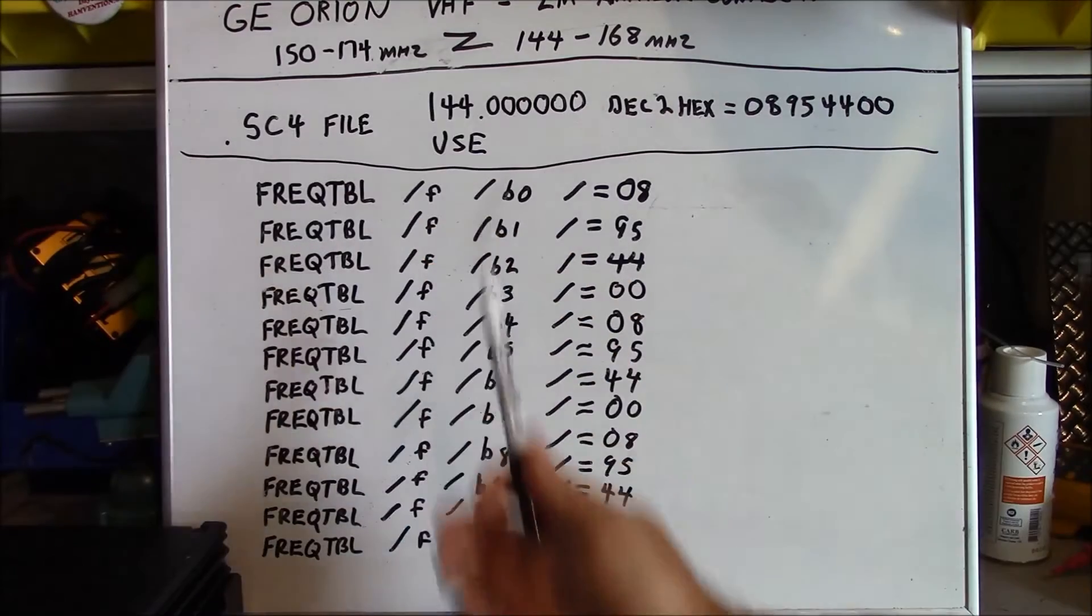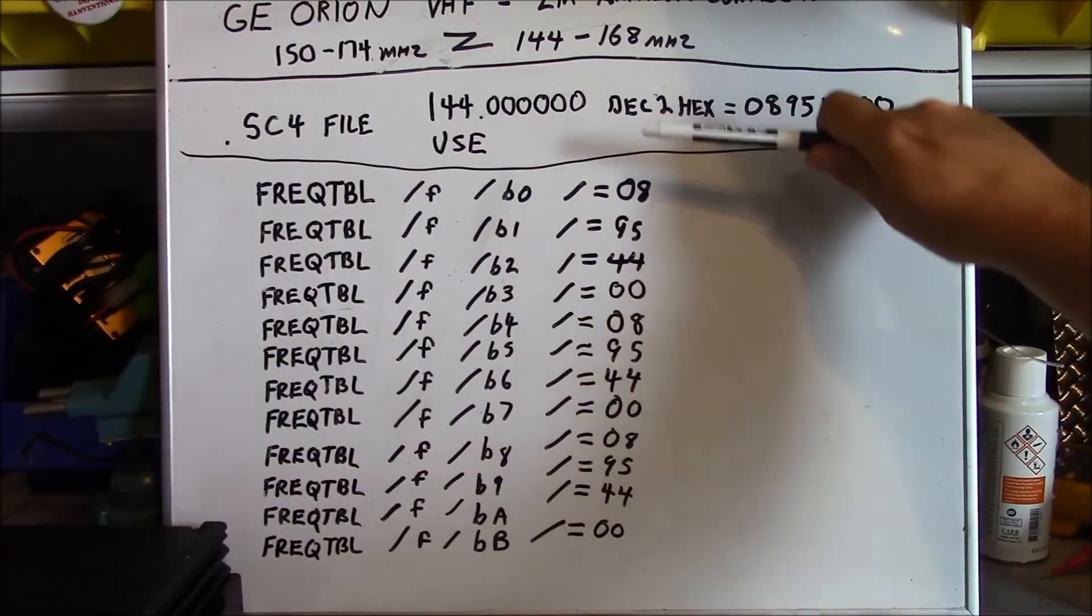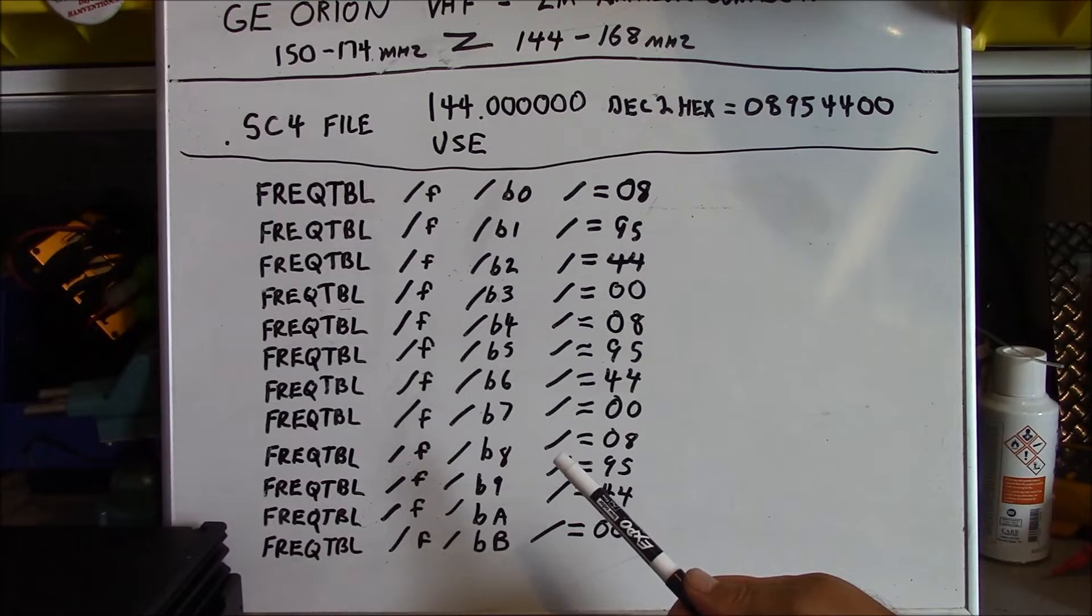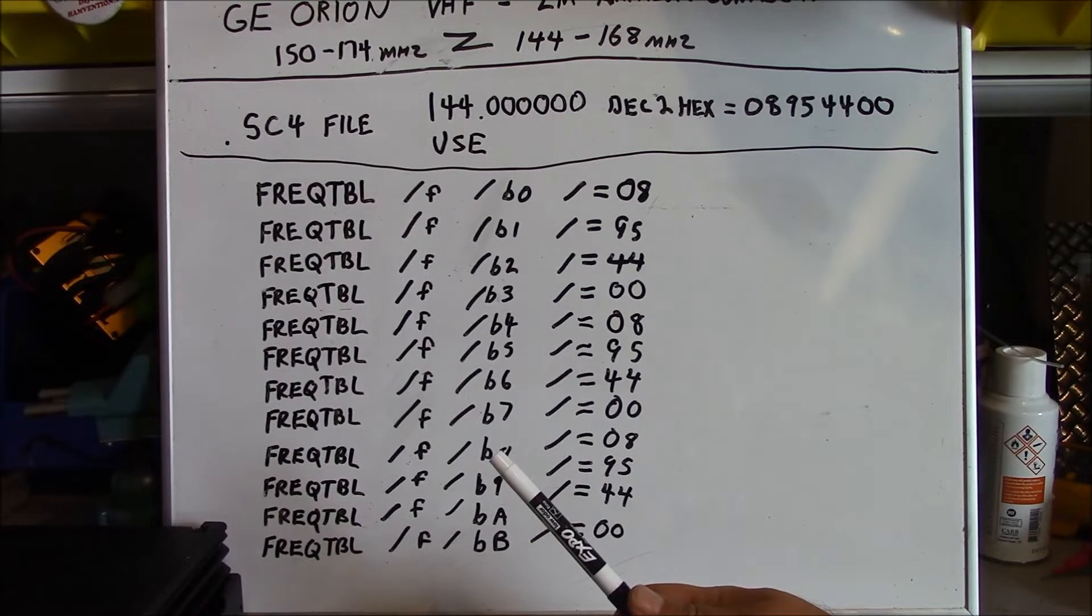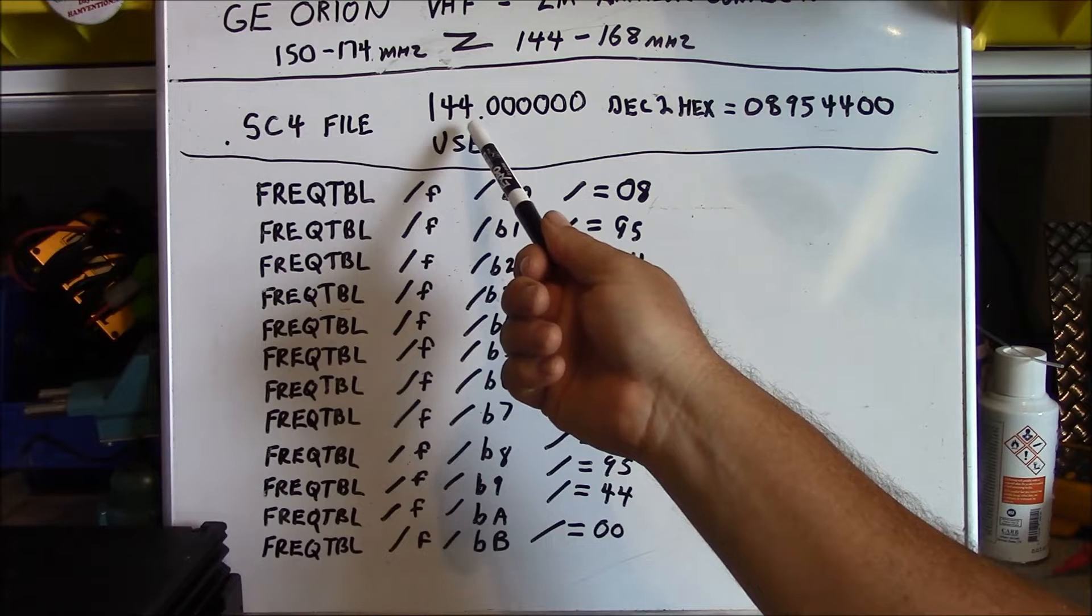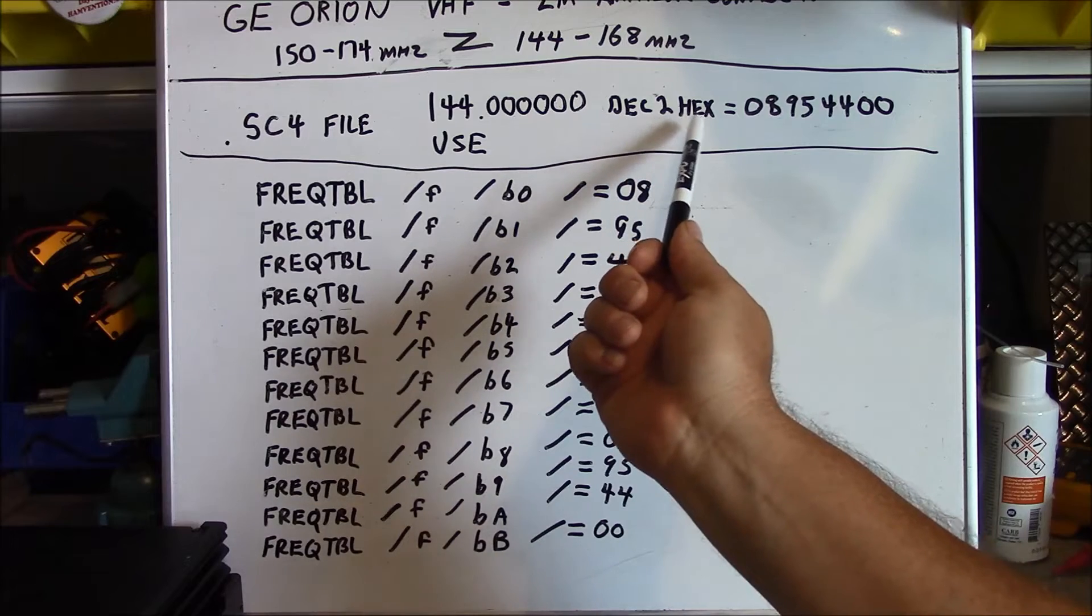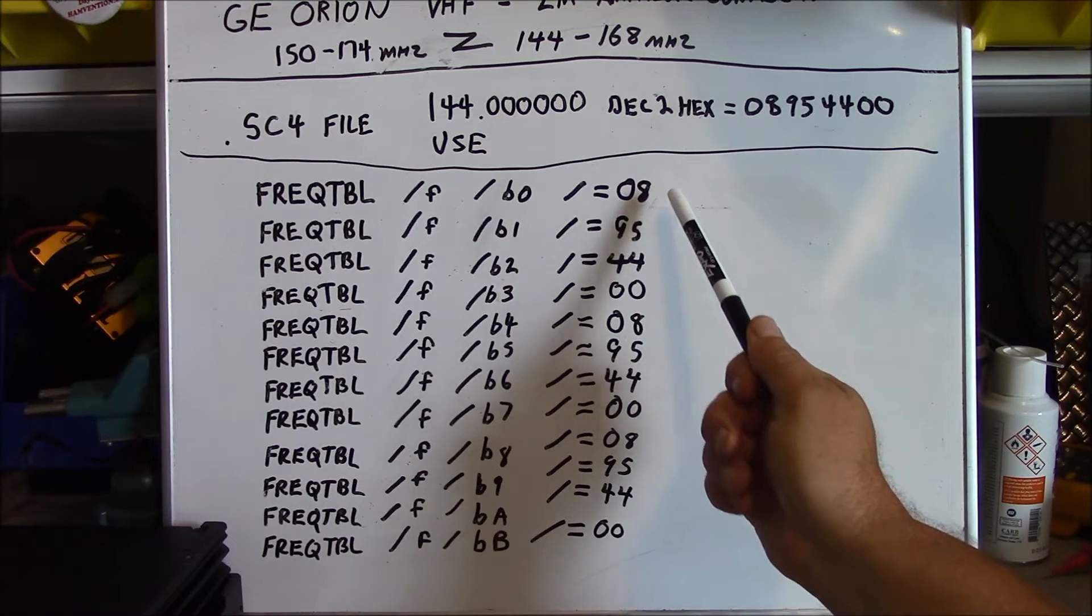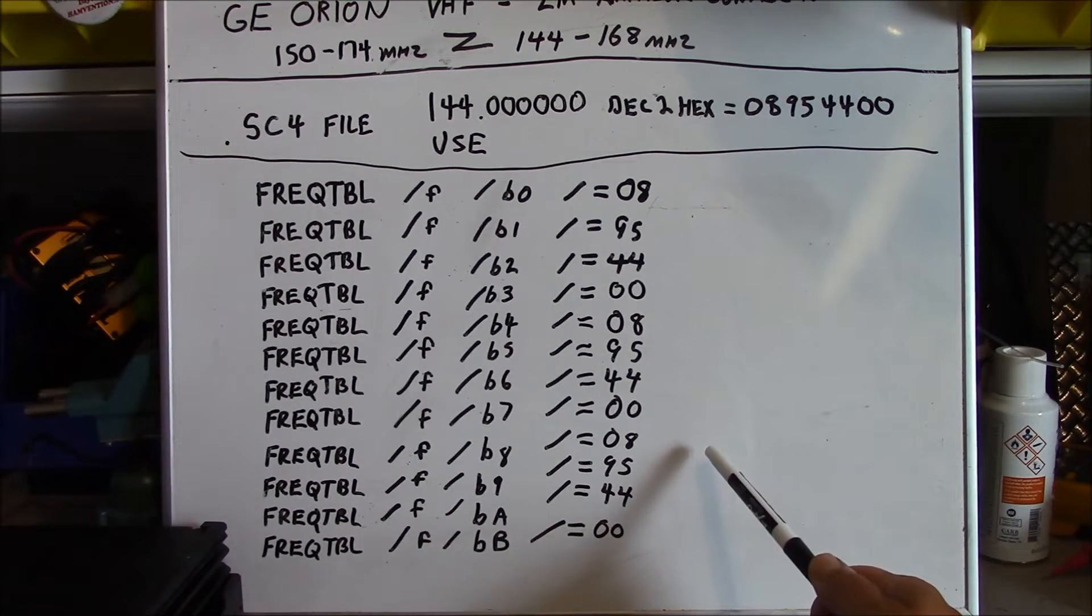This is our SC4 file and there's nothing to it. All it is is a text file that's saved with the SC4 extension. And you can see that everything below this line is essentially the text you'll put in the file to affect this particular process that we're working on here in steering our radio 6 megahertz below the operating range in order to facilitate coverage of the amateur band. So essentially you take 144 for 144 megahertz and then have 6 decimal places after that. And then do a decimal to hexadecimal conversion and come up with the hex character 0, 8, 9, 5, 4, 4, 0, 0. And then enter those in as two-digit strings in this fashion here. And they repeat themselves three times. And then save the file with an SC4 extension.